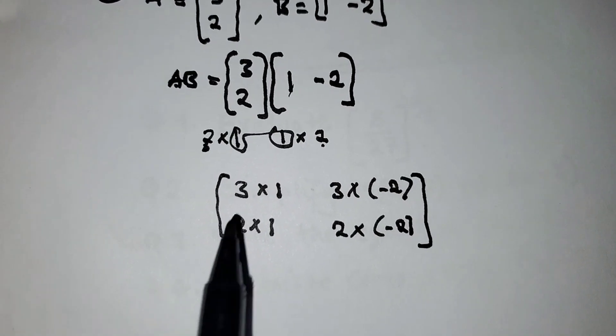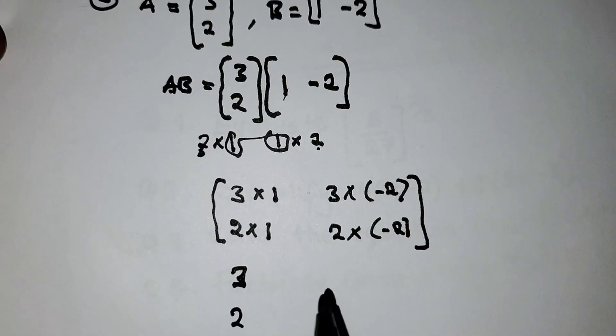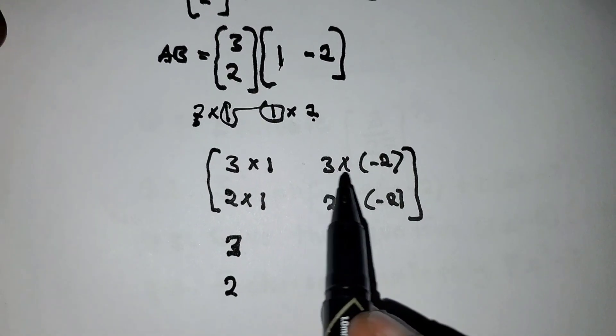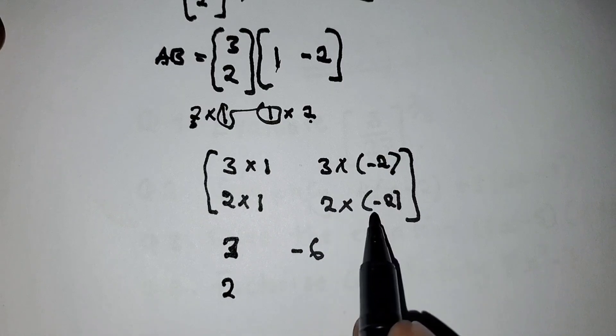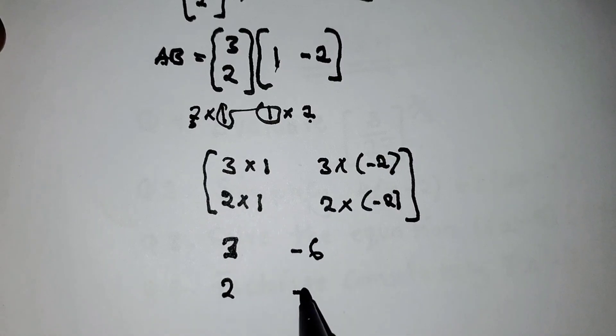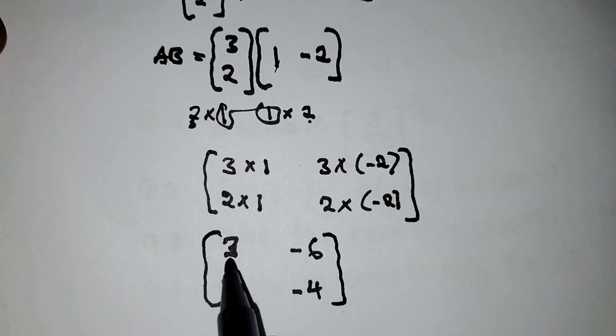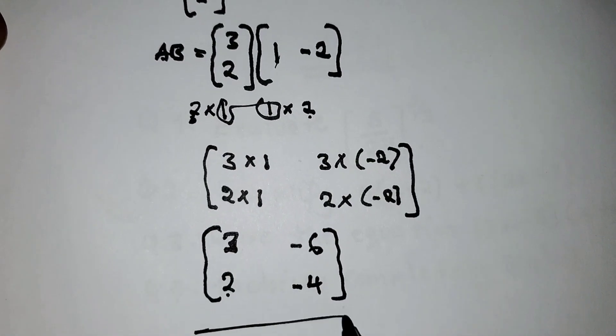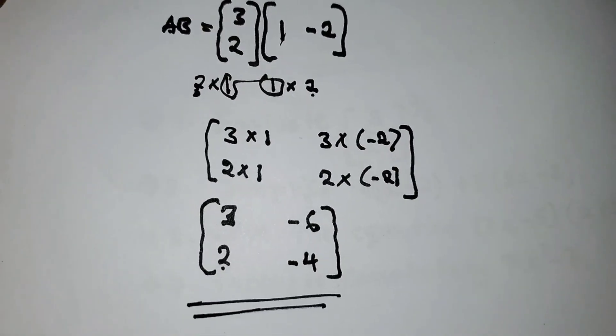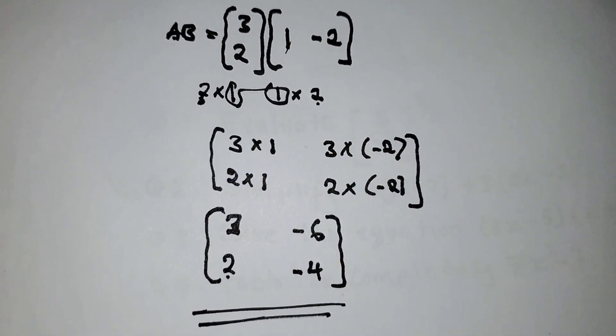3 times 1 is 3, 2 times 1 is 2, 3 times -2 is -6, and 2 times -2 is -4. So this is 3, -6, 2, -4. Now check what order this matrix is in. It's a 2 by 2 matrix, which proves this.